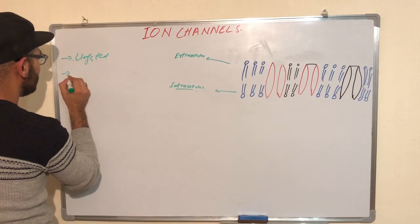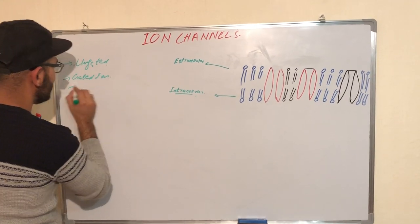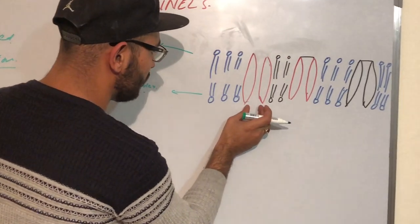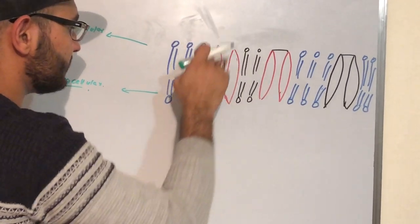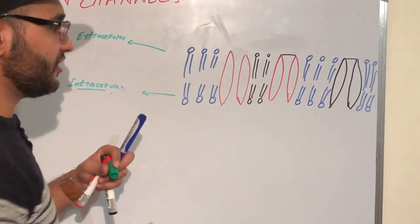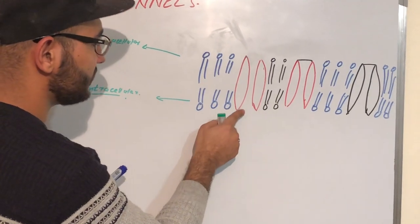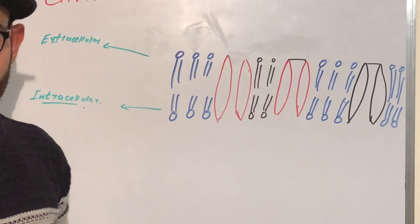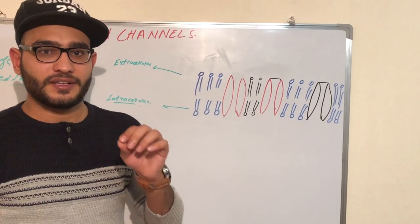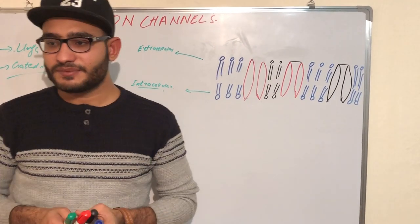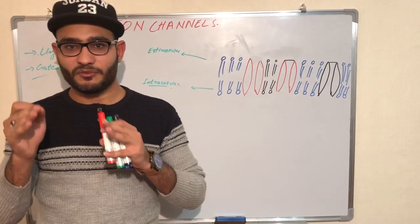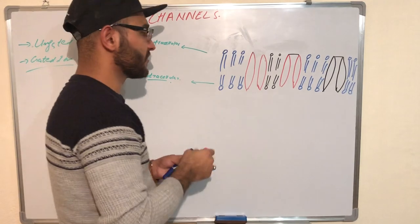Ion channels are divided into two types: un-gated ion channels and gated ion channels. Un-gated ion channels are channels which are open into the extracellular membrane as well as into the intracellular membrane. When open from both sides, ions and neurotransmitters can easily enter through this gate because it is always open. Entry of ions through un-gated ion channels is driven by a specific electrochemical gradient.